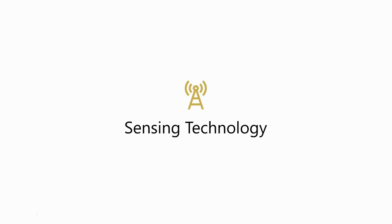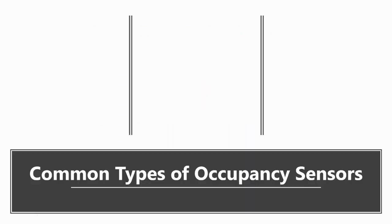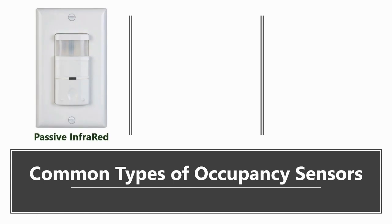Now let's review the most common technologies for sensors. There are three types most often used in commercial buildings. The first is passive infrared. Passive infrared sensors react to the movement of heat emitted by people in motion. They detect motion within a coverage area that requires a line of sight, so they cannot see occupants behind obstacles such as furniture or even glass.